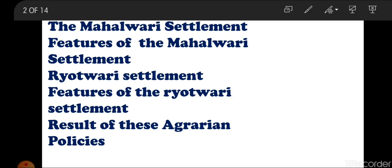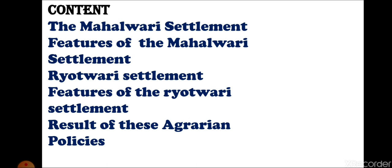In this chapter we will learn about the new policy devised after permanent settlement - the Mahalwari settlement - and its features. Then we will look at the next policy, the Ryotwari settlement, and its features. Finally, we will see the result of all these agrarian policies or revenue systems introduced by the British in India.